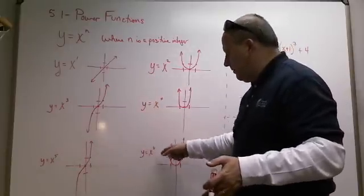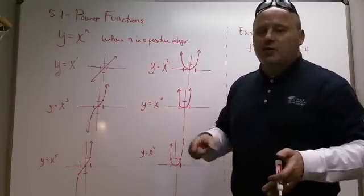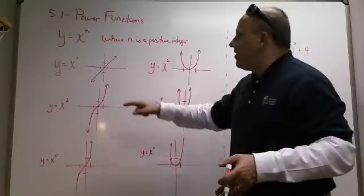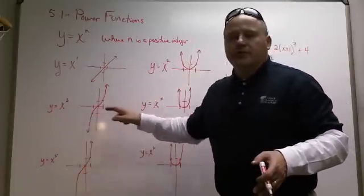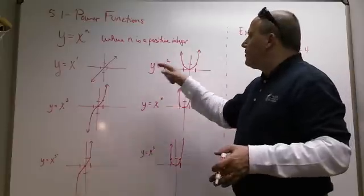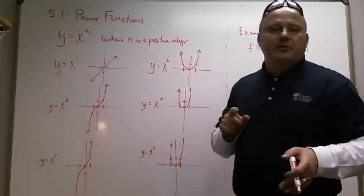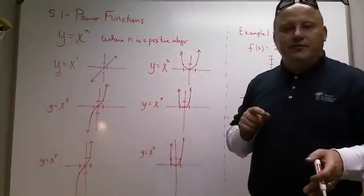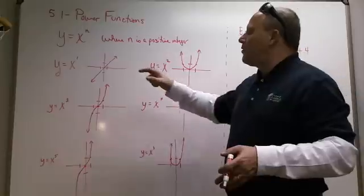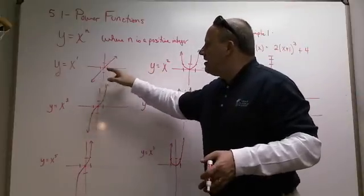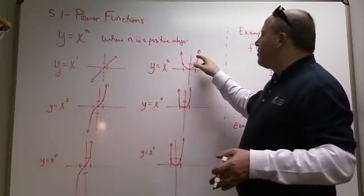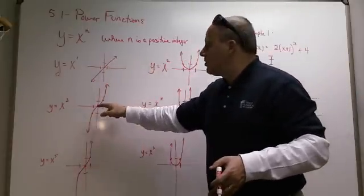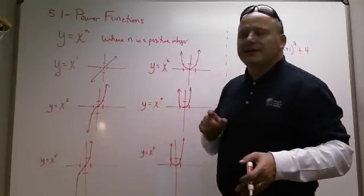I did some all the way up to y equals x to the 6th. Now, the first three should have been very familiar to you. These first three are in your library of functions to begin with. Y equals x to the 1st is just a line, y equals x to the 2nd is a parabola, y equals x to the 3rd has this little sideways s.